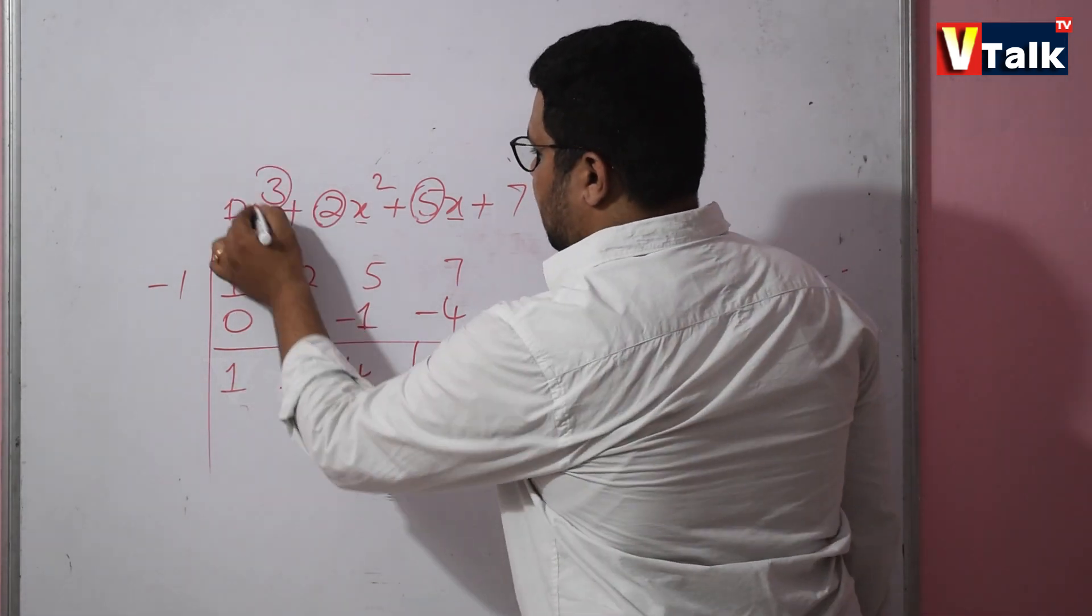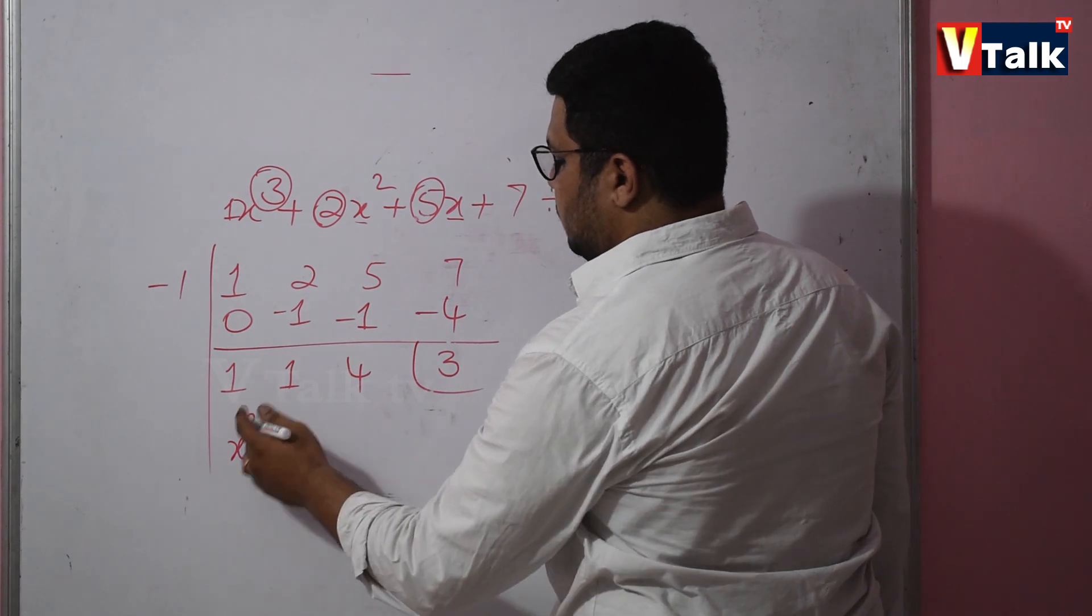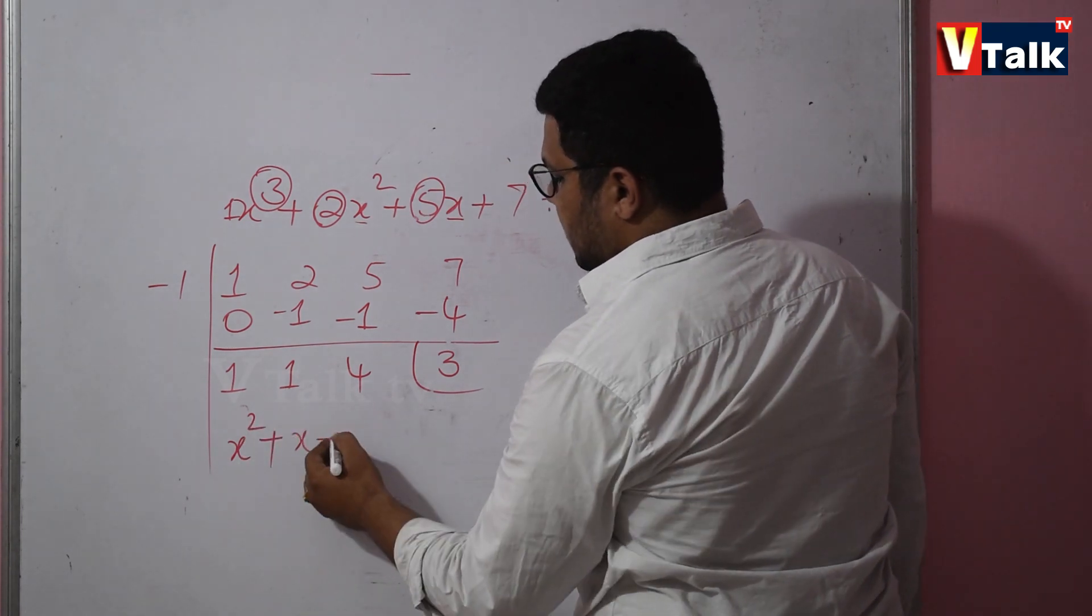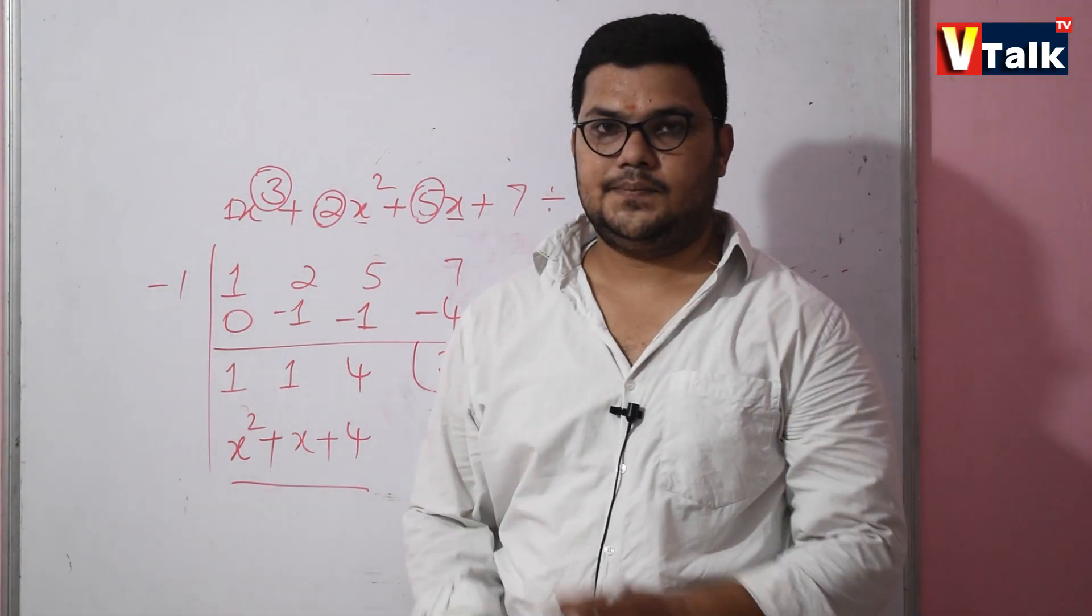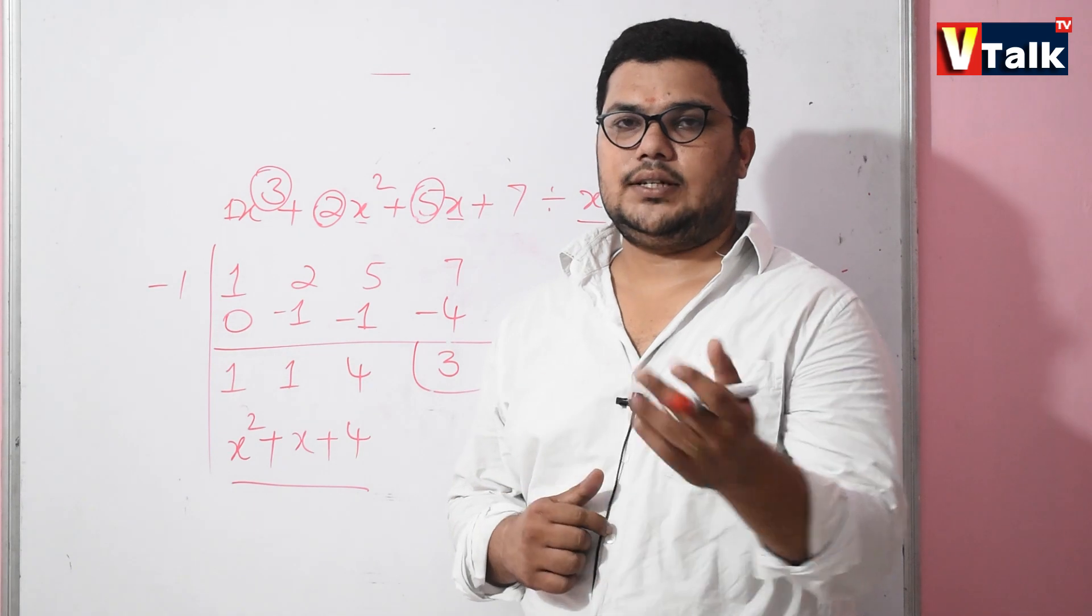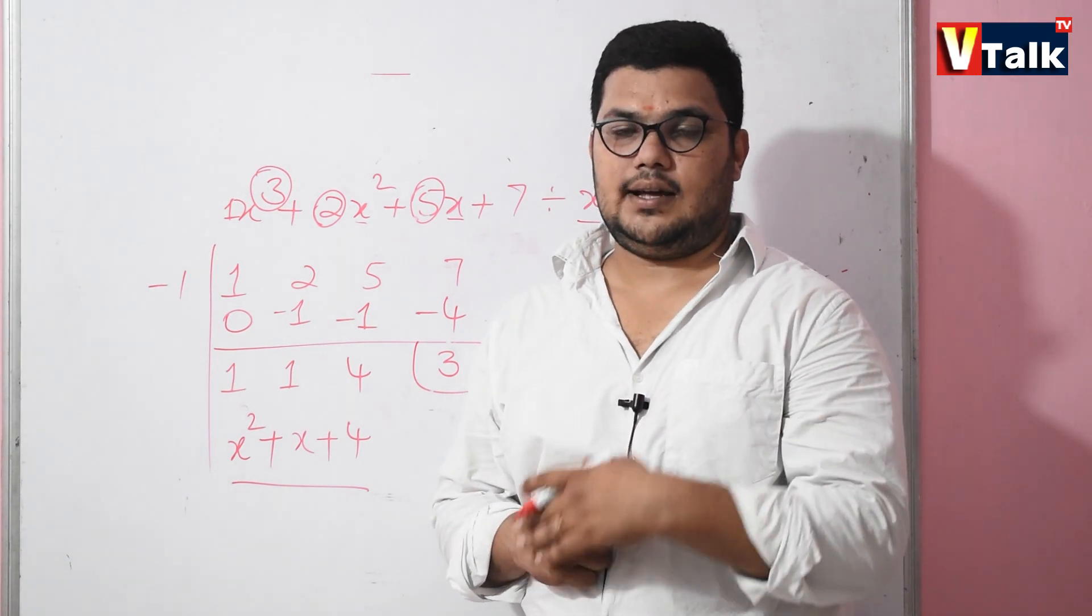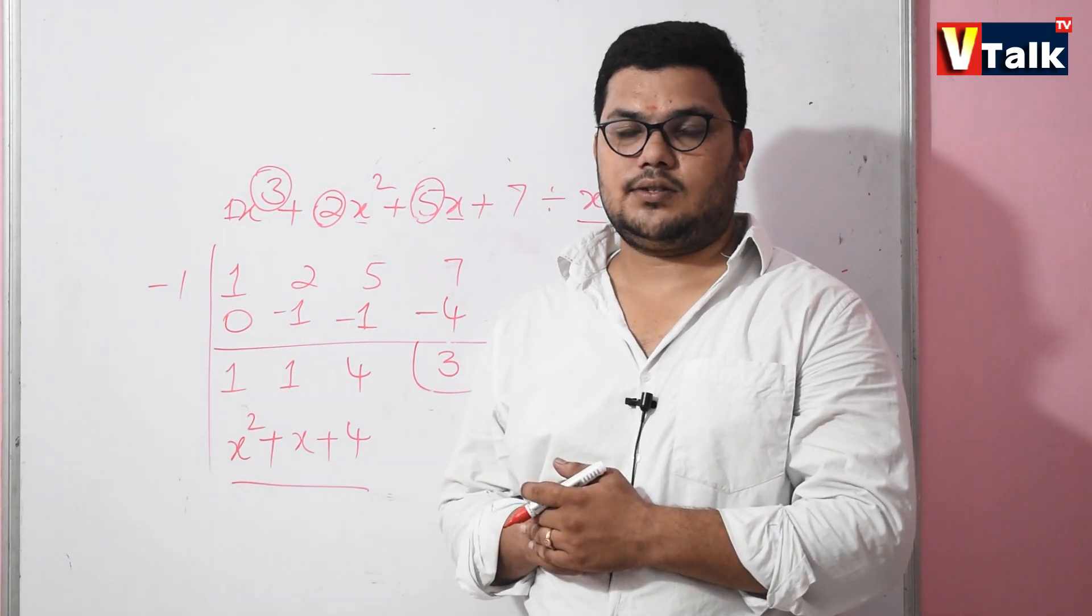To write the quotient, x squared plus 1x plus 4 and remainder is 3. So we will convert this portion to quotient and remainder form. If you cross-check in the exams, it will save you a lot of time. Practice using the video and worksheets too.